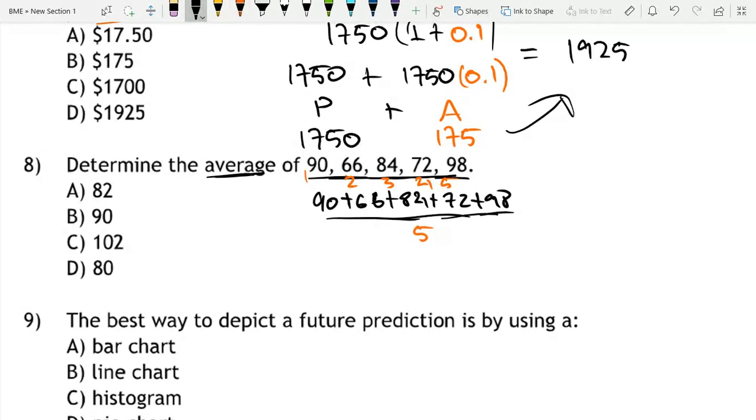And now if we do the math, this is equal to 410. Yes, I did that correctly. 410 over 5, which is equal to 82. So this is option letter A.